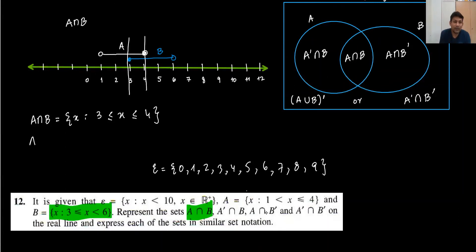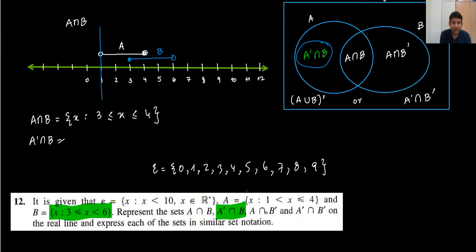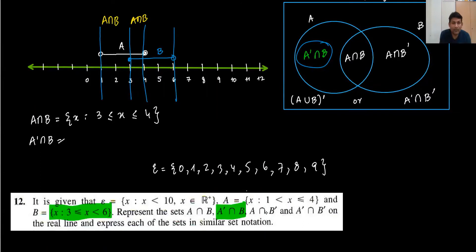Moving to A complement intersection B. This is the area in B but not in A. Looking at the Venn diagram, you can divide the regions: A intersection B is the overlap, A intersection B complement is the part only in A, and A complement intersection B is the part only in B — without A. Be careful about which region is which.